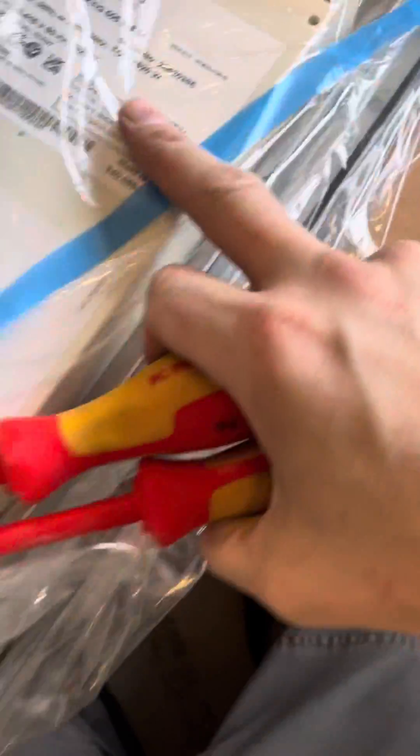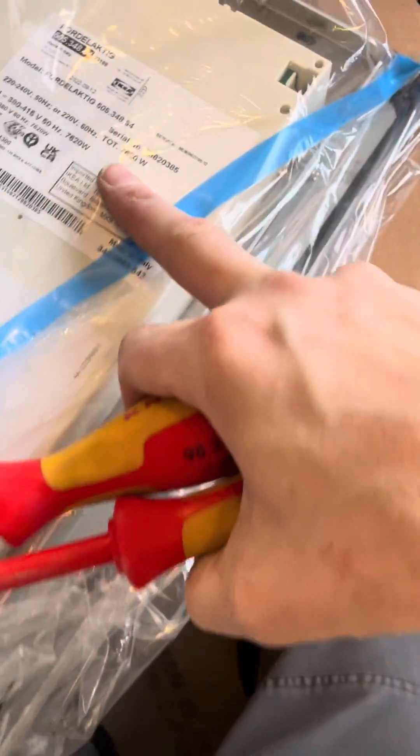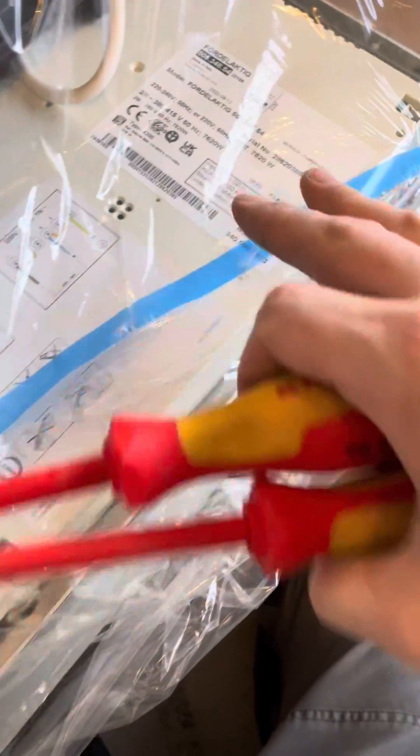Right, this one is seven kilowatt basically, 7.6 kilowatt. When you apply diversity it probably won't pull that, but you know we always allow for it.